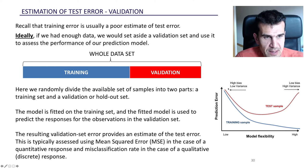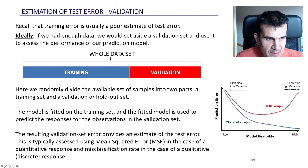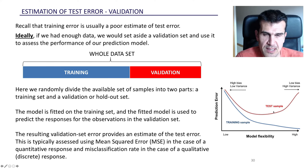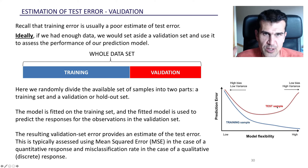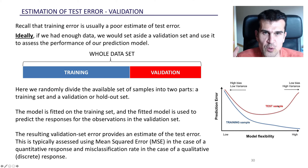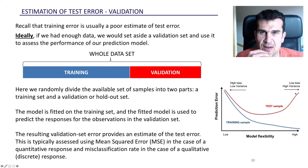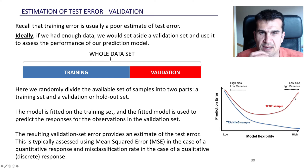If we keep on increasing the flexibility of a model, adding degrees of freedom, there is a point beyond which the model is too flexible — meaning the model starts to learn part of the noise in the training set, and because of that the model will not predict well in new situations. The test error will increase. So training error is not a good estimate of test error and we need another method to estimate it.